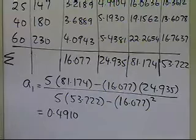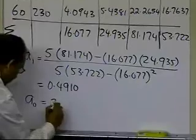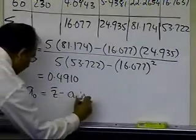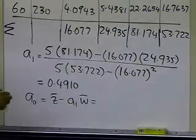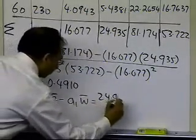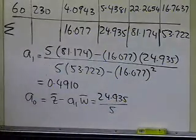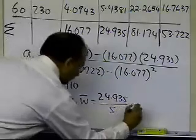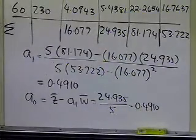Now, if I want to find a_0, a_0 is nothing but the average values of z minus a_1 times the average values of the w's. So z-bar will be the summation of the z_i, which is 24.935, divided by 5 data points, minus a_1, which I just found out, which is 0.4910.